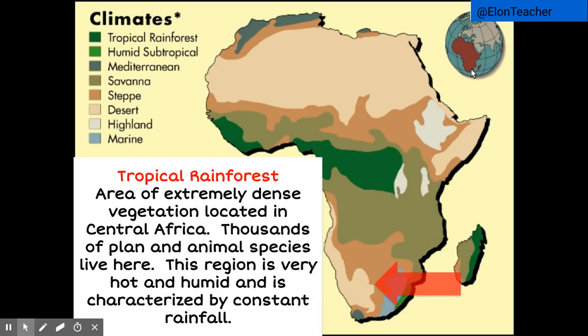Tropical rainforests are areas of extremely dense vegetation located in Central Africa. Thousands of plant and animal species live here. This region is very hot and humid and is characterized by constant rainfall. You may recognize this type of climate from movies like Tarzan and Madagascar.